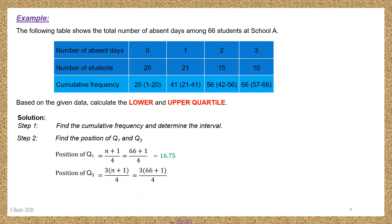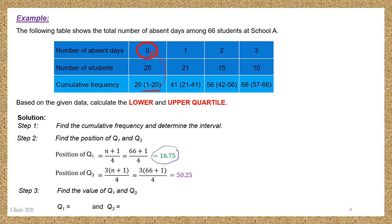Position of Q3 is 50.25. To find Q1: look at position 16.75 against the cumulative frequency — 16.75 is in between 1 and 20, therefore Q1 equals 0. For Q3: position 50.25 is in between cumulative frequencies 42 and 56, therefore Q3 equals 2.